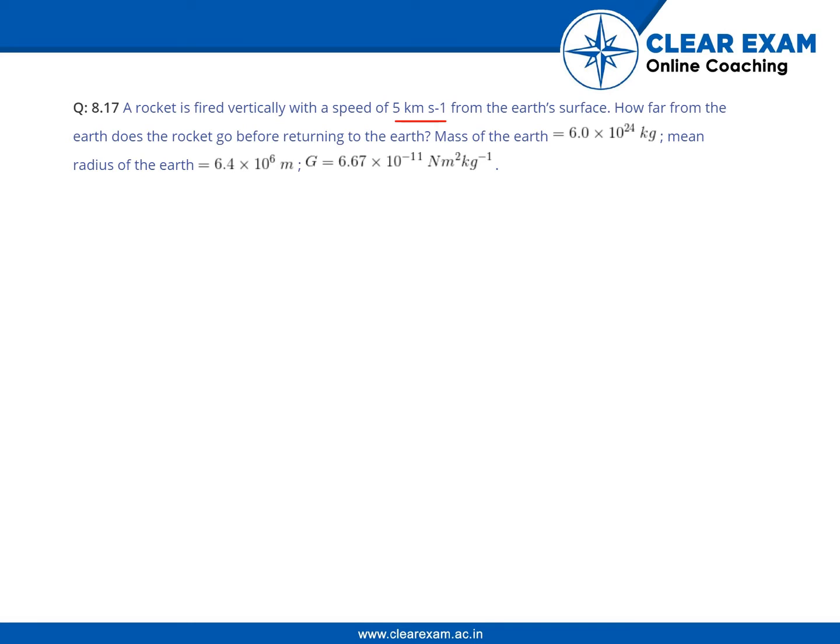The mass of Earth is given as 6 × 10²⁴ kg, the radius is given as 6.4 × 10⁶ meters, and the gravitational constant is given as 6.67 × 10⁻¹¹ Newton meter squared per kg.